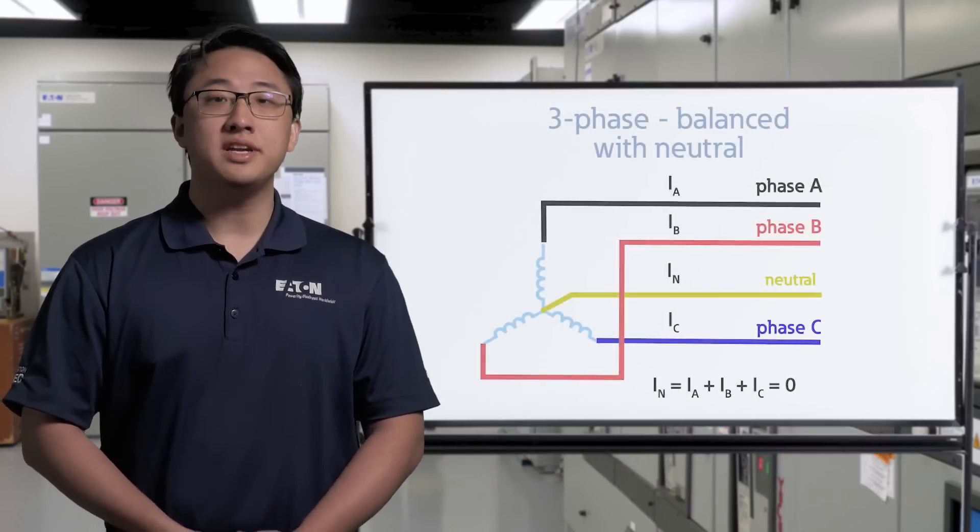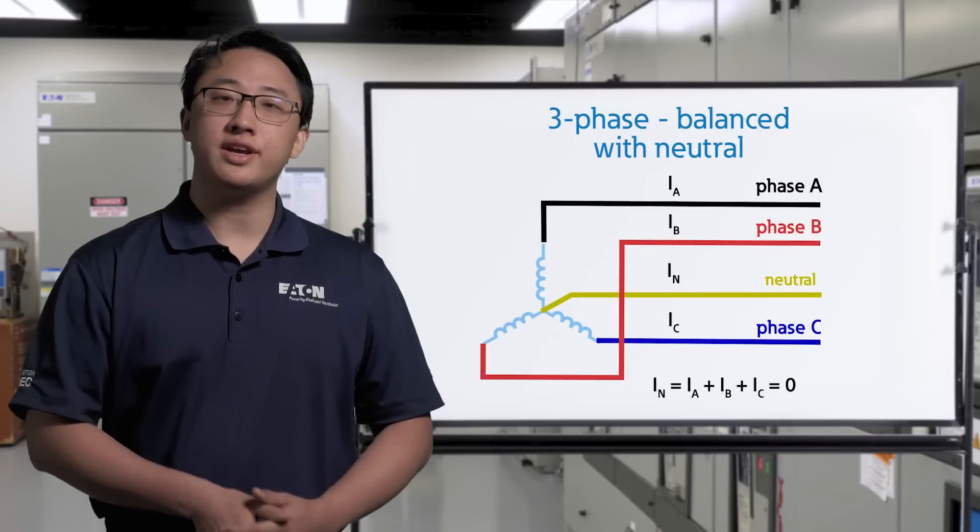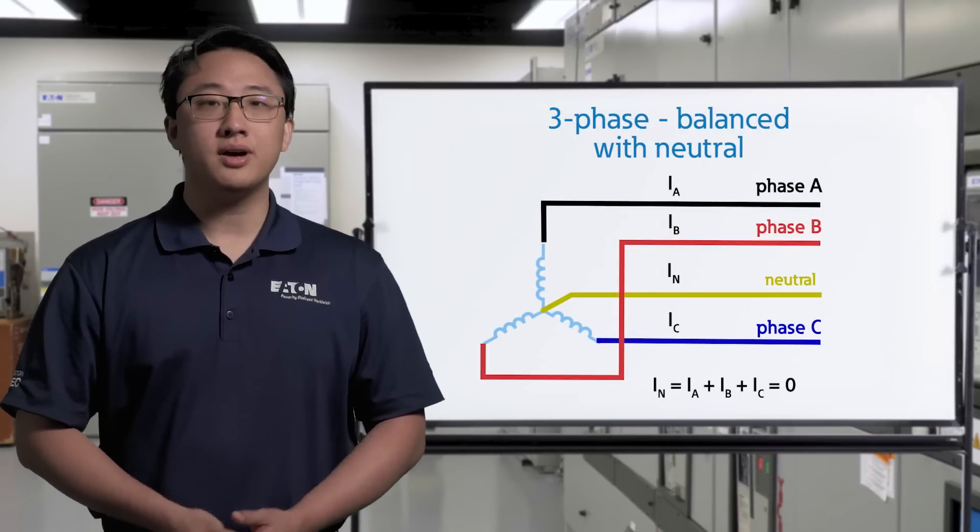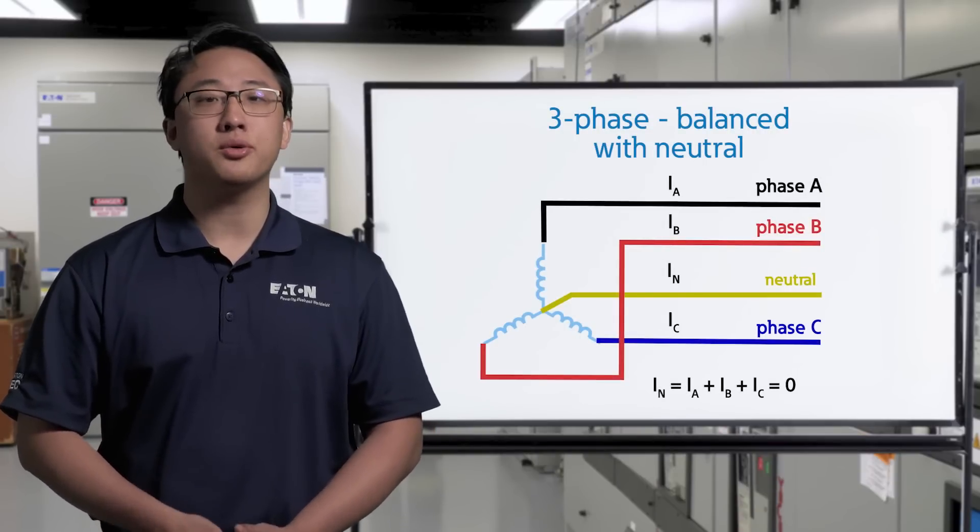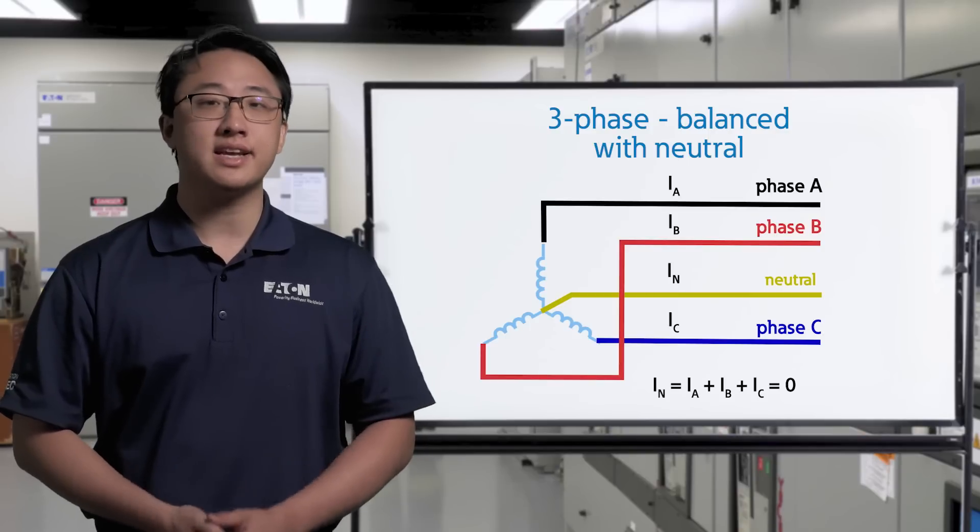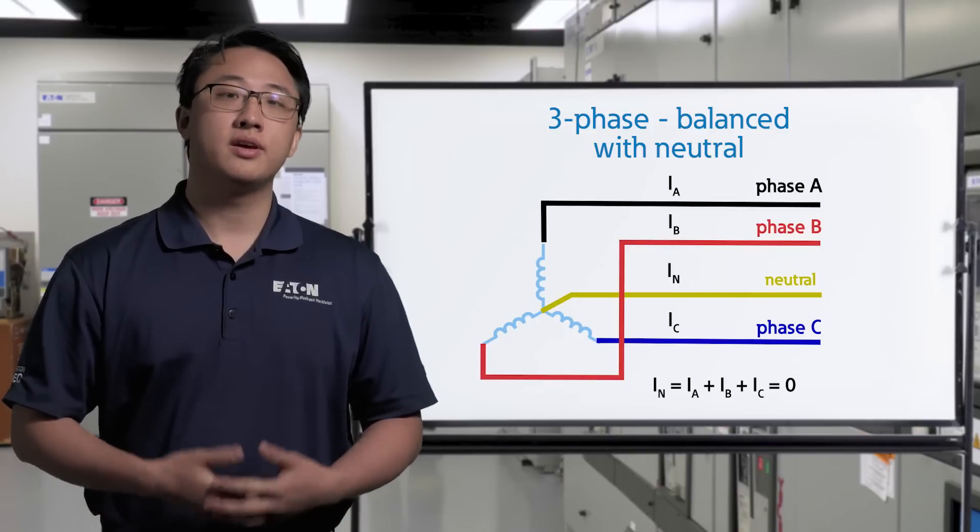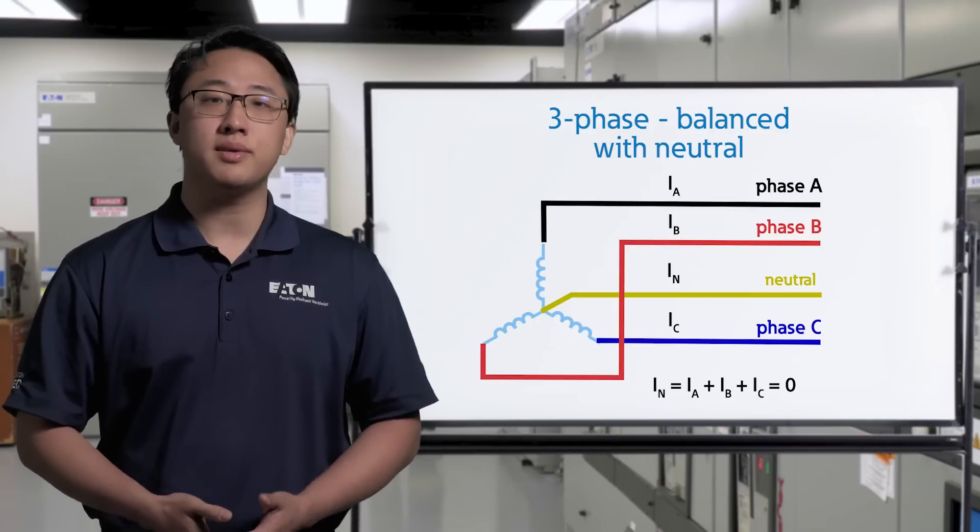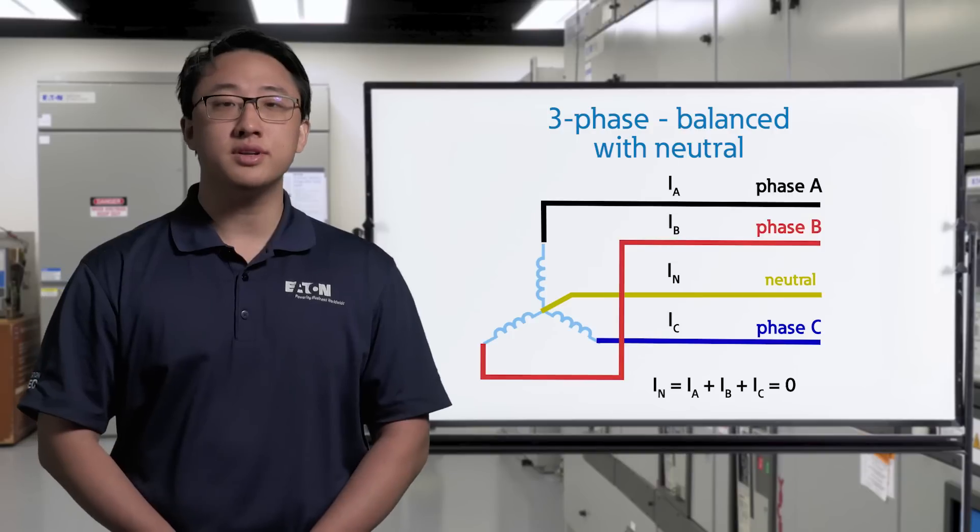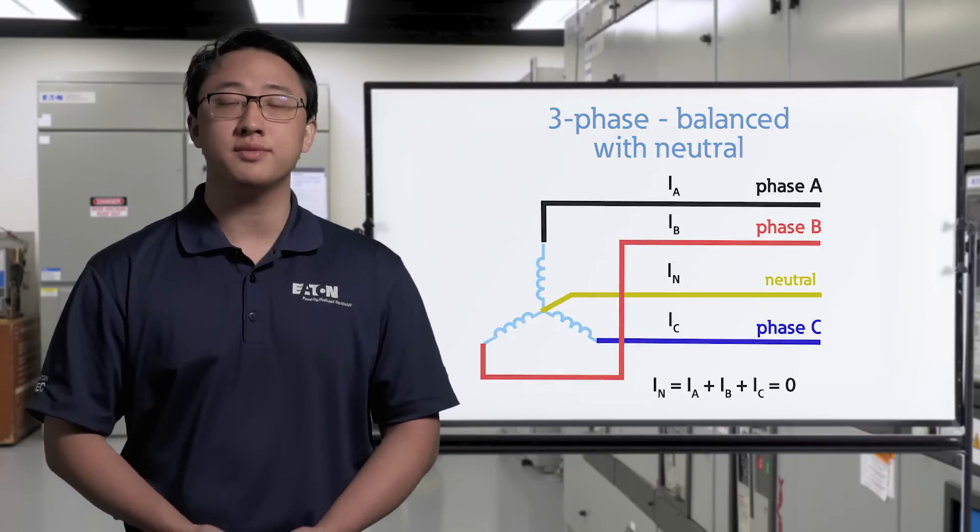To actively balance the system, we need to design for equal loading on each leg of the transformer. This will help transmit power much more efficiently and lower excess heat in the system, extending the life of the transformer. Most three-phase loads will draw even amounts of current per phase, so it's mostly single-phase loads on the three-phase system that need to be considered.